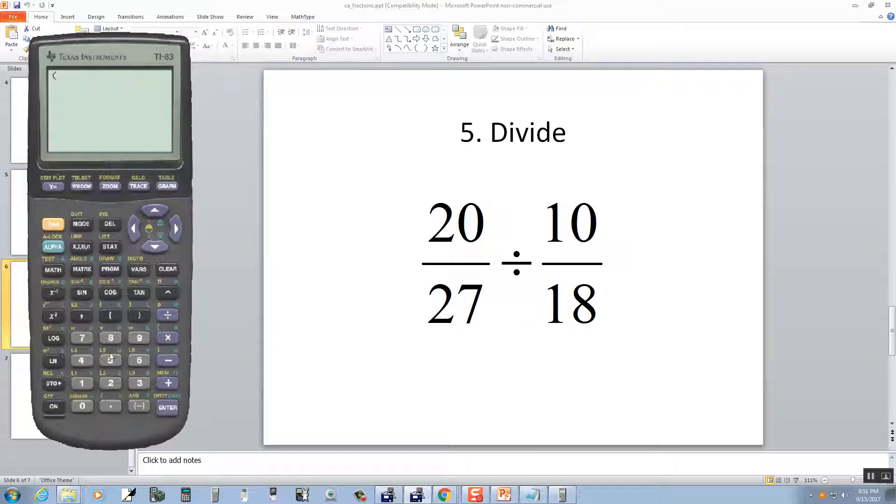So, I'm going to do a beginning parentheses, 20 divided by 27, closing parentheses, and then divided by beginning parentheses, 10 divided by 18, closing parentheses. And then push Enter.